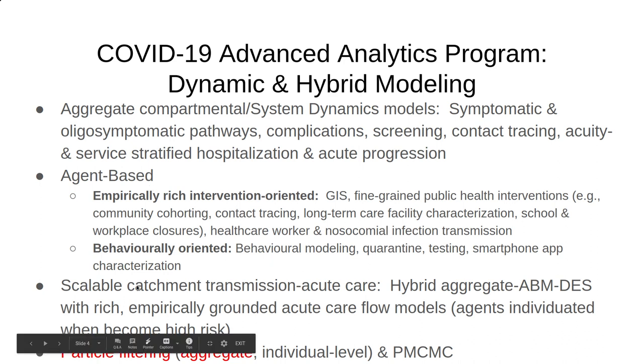Beyond those agent-based models, we also have an extraordinary model led by my student, Yuan Tian, which provides a sort of scalable characterization of transmission in catchment basins together with a very detailed acute care characterization. This is a hybrid model that uses a hybrid of compartmental or system dynamics characterization for elements of the low-risk population, agent-based characterization for high-risk individuals, and discrete event simulation in facility at a very detailed level of acute care flows, from emergency room contact to various hospital wards to ALC or alternative levels of care considerations before discharge into the community.